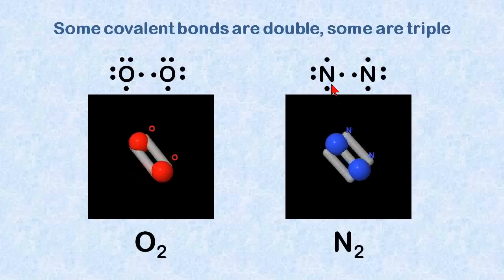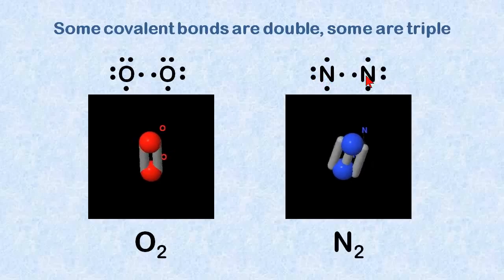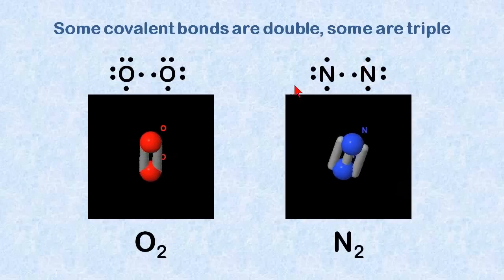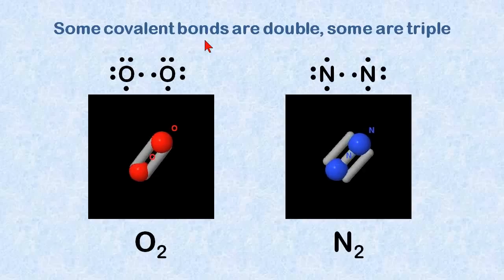Nitrogen has five electrons in its valence shell. Two of these on the outside are okay. When nitrogen forms its diatomic molecule of N2, it shares three electrons on this side and three on this side, and forms a triple bond. So some covalent bonds are double bonds, and some are triple bonds.